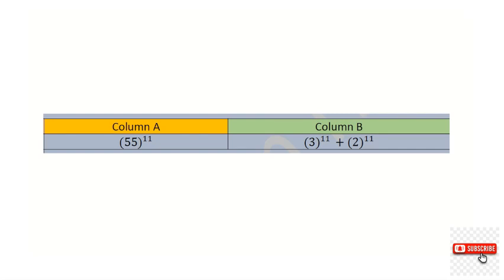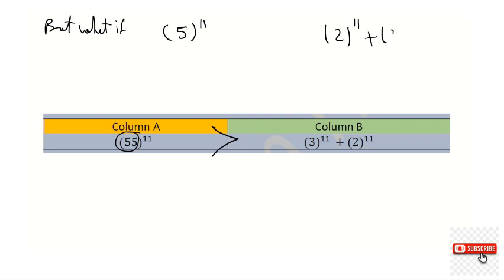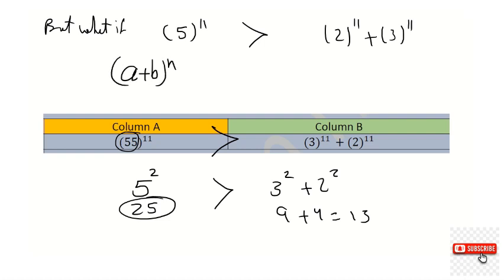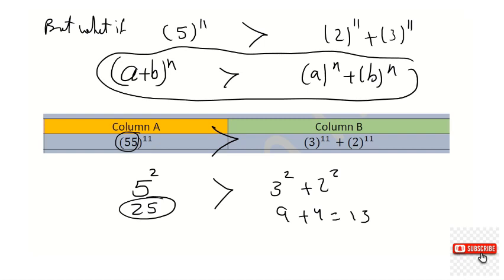Regarding question number six: comparing 55 to the power of 11 versus 3 to the power of 11 plus 2 to the power of 11. Of course 55 is greatest. This demonstrates a general rule: (a + b) to the power of n is always greater than a to the power of n plus b to the power of n, where a and b are positive integers. No matter how you split the number, the combined base raised to the power is always greatest.